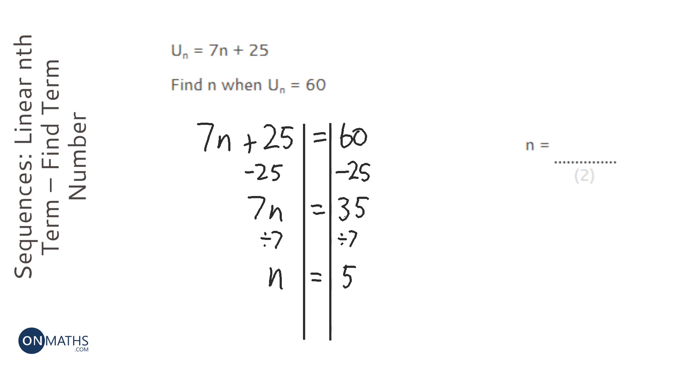Now it's a good way of checking to see if a number is in a sequence, because if you work out that n is a decimal, then that number is not in the sequence. So it isn't a decimal, it's an integer, so we know 60 is the fifth term in the sequence.